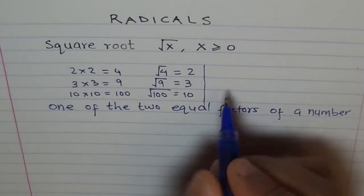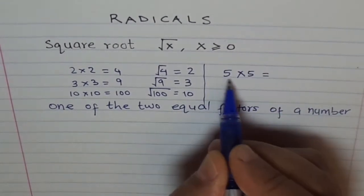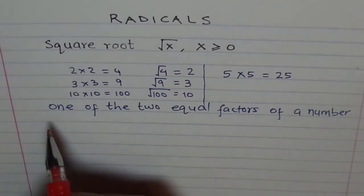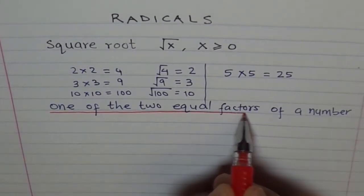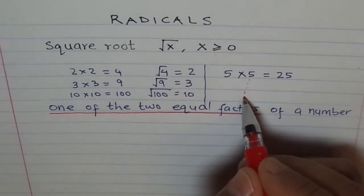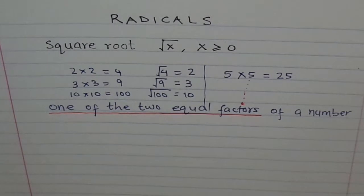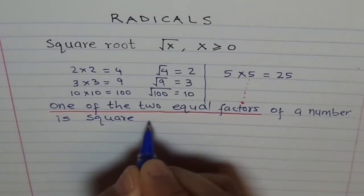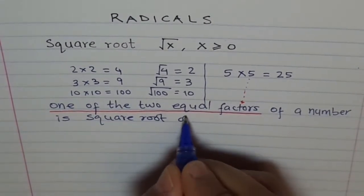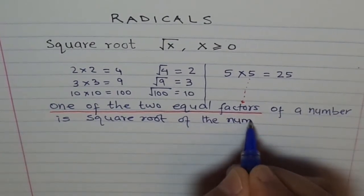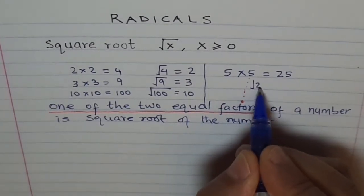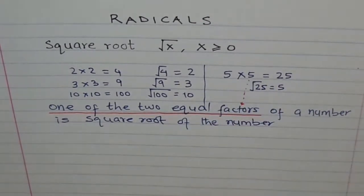See it like this once again. Let's do 5 times 5. So 5 and 5 are factors of 25 — both are equal. One of the two equal factors is the square root, so we will take only one of them. One of the two equal factors of a number is the square root. What is square root of 25? Square root of 25 is equal to 5. One of the two — you can pick any one of them. This is the basic definition of square root.